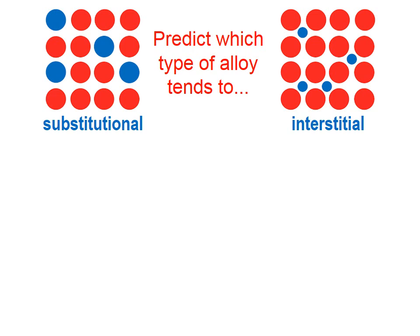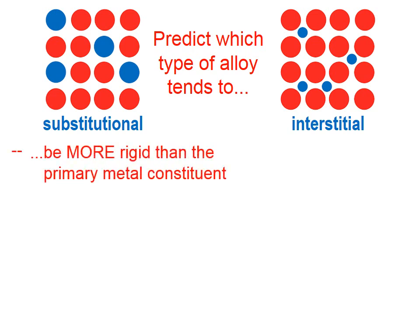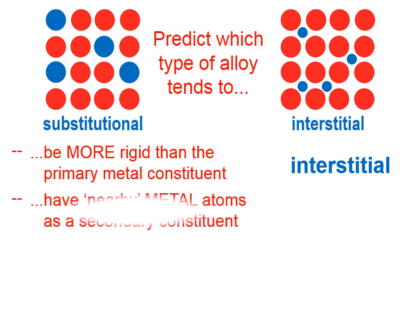Let's predict which type of alloy tends to be more rigid than the primary metal constituent — and that would be an interstitial alloy. You can imagine, in the upper right corner here, if we're trying to slide some of these atoms to the right, the little atoms in the interstitial spaces tend to make it difficult to slide those red atoms to the right. Interstitial alloys tend to be more rigid than the primary metal constituent.